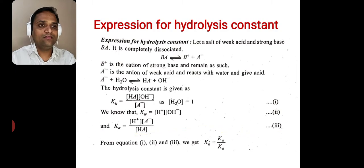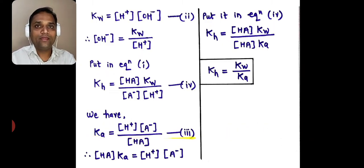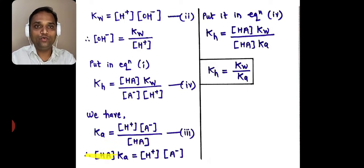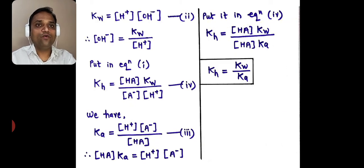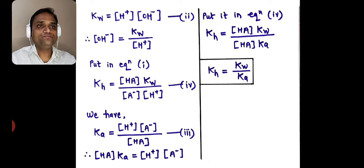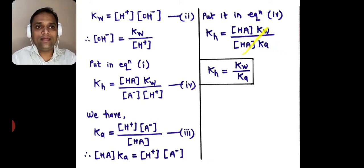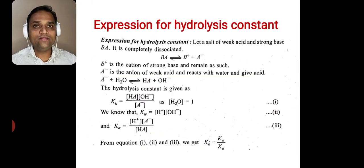From Ka = [H⁺][A⁻] / [HA], we rearrange to [HA]·Ka = [H⁺][A⁻]. Substituting into equation 4, KH = [HA]·Kw / ([HA]·Ka). The [HA] terms cancel, giving finally KH = Kw / Ka — the expression for the hydrolysis constant for salts of weak acid and strong base.